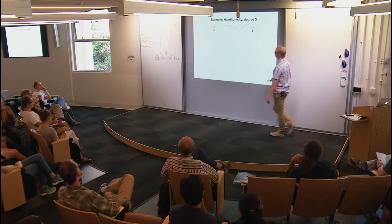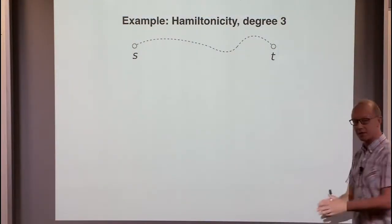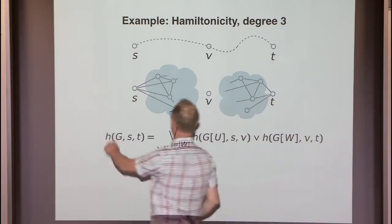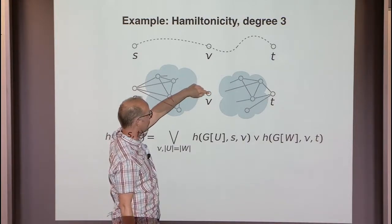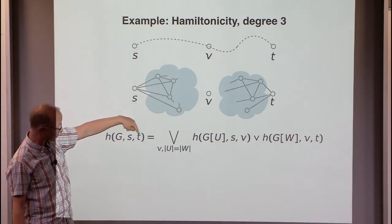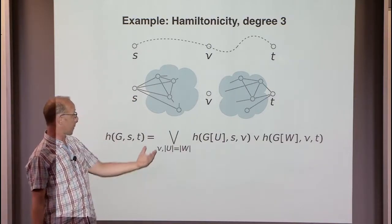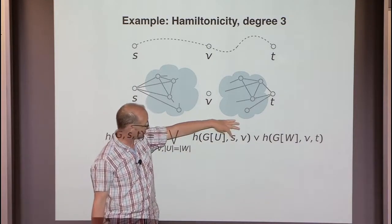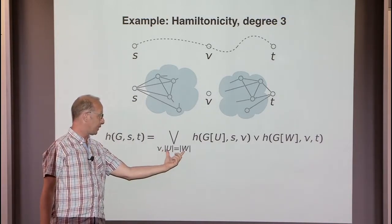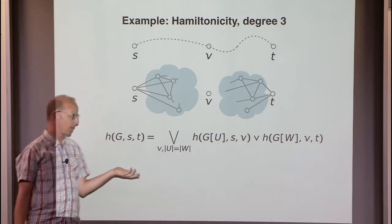Another example — let me still expand the concept of checking a witness. So here is Hamiltonicity in degree-3 graphs. If there is a Hamiltonian path from s to t, then it goes through some vertex v in the middle, so the graph looks somewhat like this. There is a Hamiltonian path from s running through half of the graph, going through v, and then running through the rest. So this predicate: in G there is a Hamiltonian path from s to t if and only if there is a way to split G into two subgraphs U and W, such that there is a path from s to v and then from v to t, and these two subpaths both have length n/2.